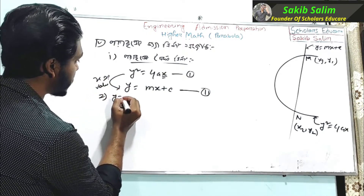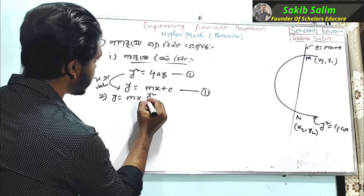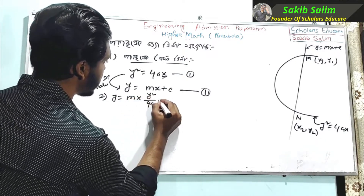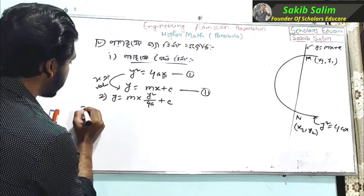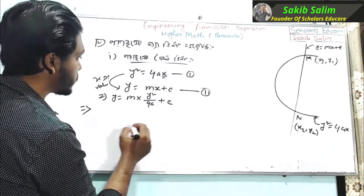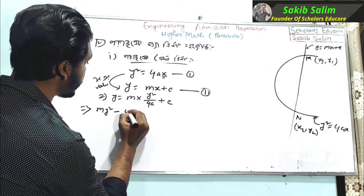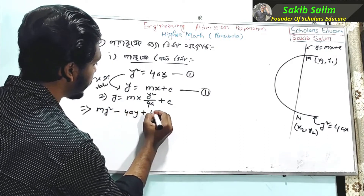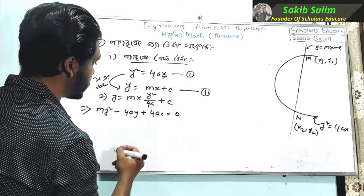Y is equal to m into y squared divided by 4a plus c. Then we get: y squared minus 4ay plus 4ac is equal to 0.